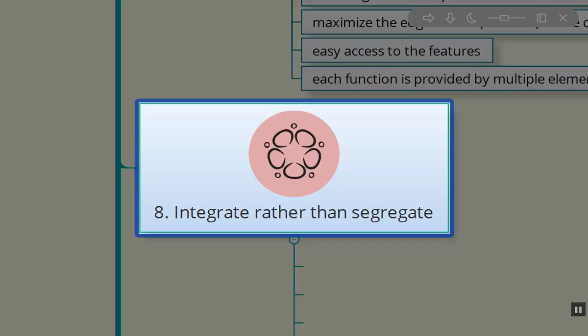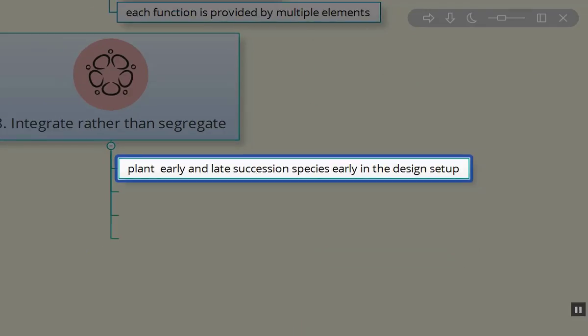Integrate rather than segregate. Very important concept, not just with people culturally and socially, but also with our plant species. So an example would be during planting of fruit and nut trees on your site and creating a food forest or whatever, or an orchard. We want to integrate both early and late succession species.